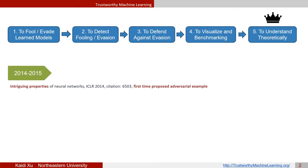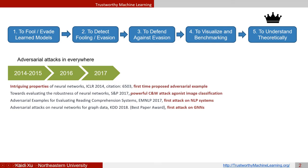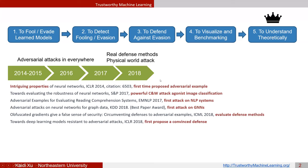In 2014, Christian Szegedy from Google Research first discovered the adversarial example and used the term 'intriguing properties of neural networks.' Over the next two years, adversarial attacks extended to multiple deep neural network tasks such as image classification, NLP, and graph neural networks. In 2018, an evaluation of defense methods claimed that most existing defenses were fake, relying on obfuscated gradients. Also in 2018, Madry's group from MIT proposed adversarial training, which remains a convincing defense method today.